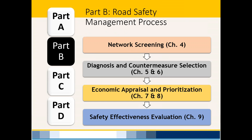Part B is network screening — the meat and potatoes of HSIP. We screen our roadway network extensively for project prioritization. It also covers diagnosis, countermeasure selection, economic appraisal, and prioritization. If you're in planning, you can use it for build versus no-build comparisons. There's also safety effectiveness evaluation — we are required to write an annual report to the feds, and many of our projects require safety evaluations.